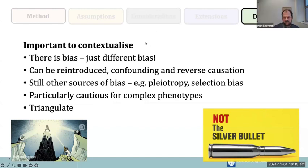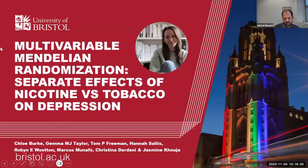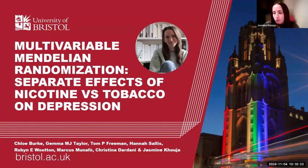Our next speaker is Jasmine Kuja, a senior research associate at the University of Bristol who specializes in psychology and the epidemiology of e-cigarettes and nicotine use. She'll present a multivariable Mendelian randomization analysis. This is an example of using multivariable Mendelian randomization, specifically looking at trying to separate the effects of nicotine versus tobacco on depression — where tobacco refers to the other constituents of tobacco smoke other than nicotine. This project was run by Chloe Burke.